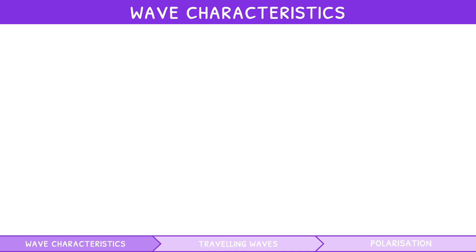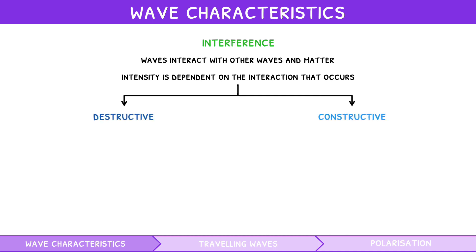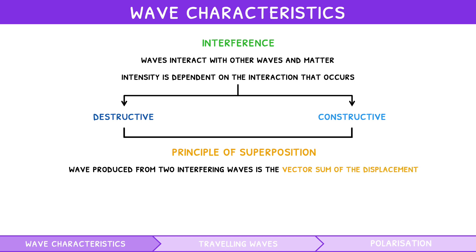However, waves rarely appear alone, and often interact with other waves or even matter, known as interference. Naturally, the intensity of the resulting wave is also dependent on the interaction that occurs. Interference can take two forms, destructive and constructive. During either, the principle of superposition states that the wave produced from two interfering waves at any point is the vector sum of their displacements. Let's explore what this means with examples.